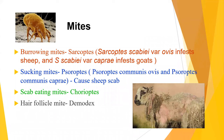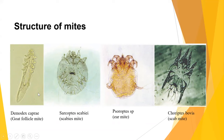Mites can be broadly classified into four types: burrowing mites (Sarcoptes), sucking mites (Psoroptes and Chorioptes), and follicle mites (Demodex). For goats, the burrowing mite is Sarcoptes capri; for sheep, it is Sarcoptes scabiei. Demodex mites are cigar-shaped or elongated mites found in hair follicles and sebaceous glands.